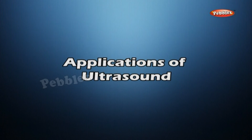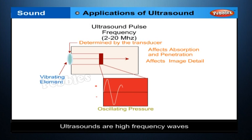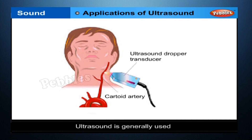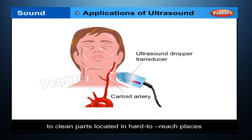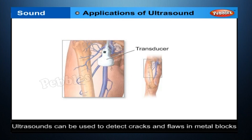Applications of ultrasound. Ultrasounds are high-frequency waves. Ultrasounds are able to travel along well-defined paths, even in the presence of obstacles. Ultrasound is generally used to clean parts located in hard-to-reach places, for example, spiral tubes, odd-shaped parts, electronic components, etc. Ultrasounds can also be used to detect cracks and flaws in metal blocks.